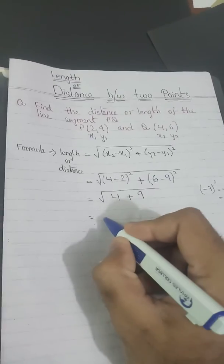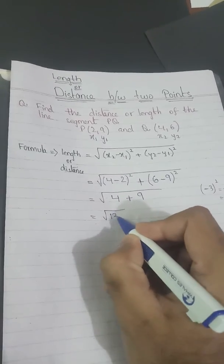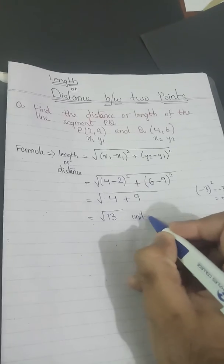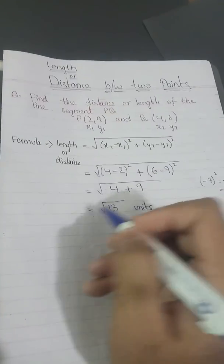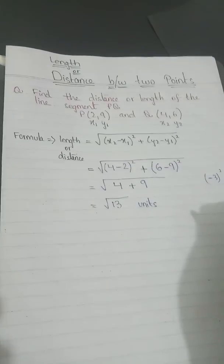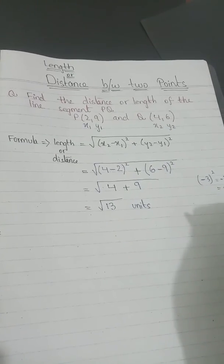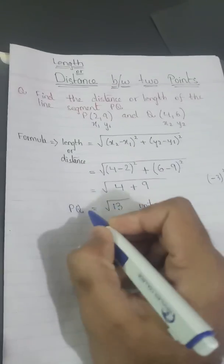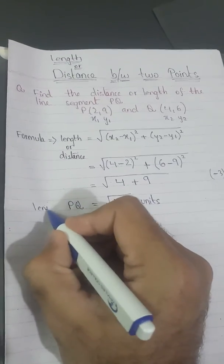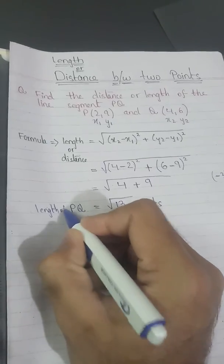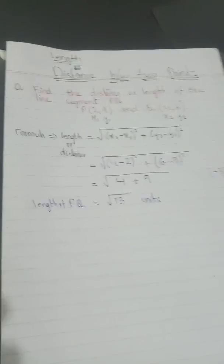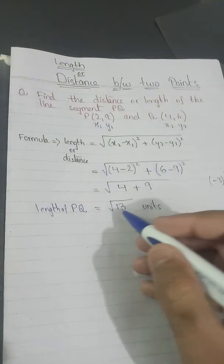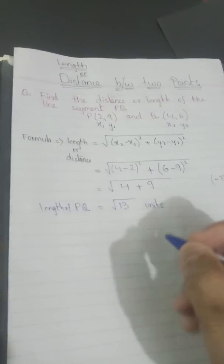Adding 4 and 9, I get square root of 13. You can also write the answer as a decimal, but this is also acceptable. So the length of PQ, or the distance between P and Q, is equal to the square root of 13 units.